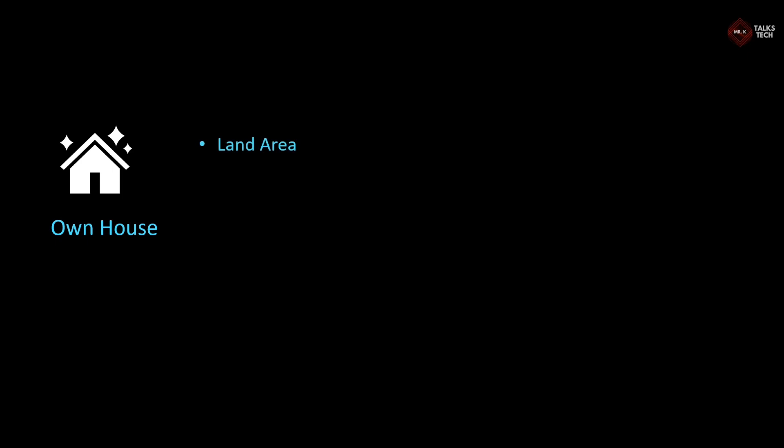Consider you are building your own house. To build an own house there are different parameters required. The most important ones are: we need to have a land area, we need to have a house plan, and the cost necessary to build the house. Apart from this there are several other managing things like choosing the right engineer, selecting what materials to use, and several others. So building a house is clearly a tedious process.